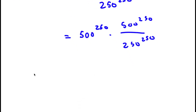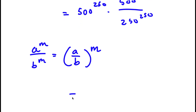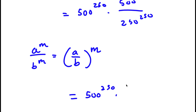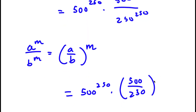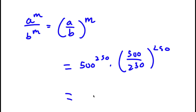Now, if I have something in the form a to the power of m over b to the power of m, this is the same thing as a over b to the power of m. So 500 to the power of 250 over 250 to the power of 250 can be rewritten as 500 over 250 to the power of 250. And 500 over 250 is simply equal to 2.